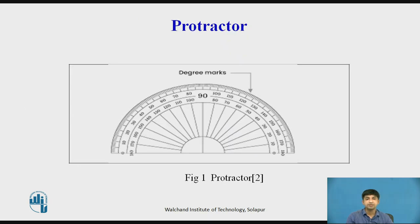Protractor. A simple protractor is the basic device for measuring angles. At best, it can provide a least count of 1 degree for smaller protractors and half a degree for large protractors.